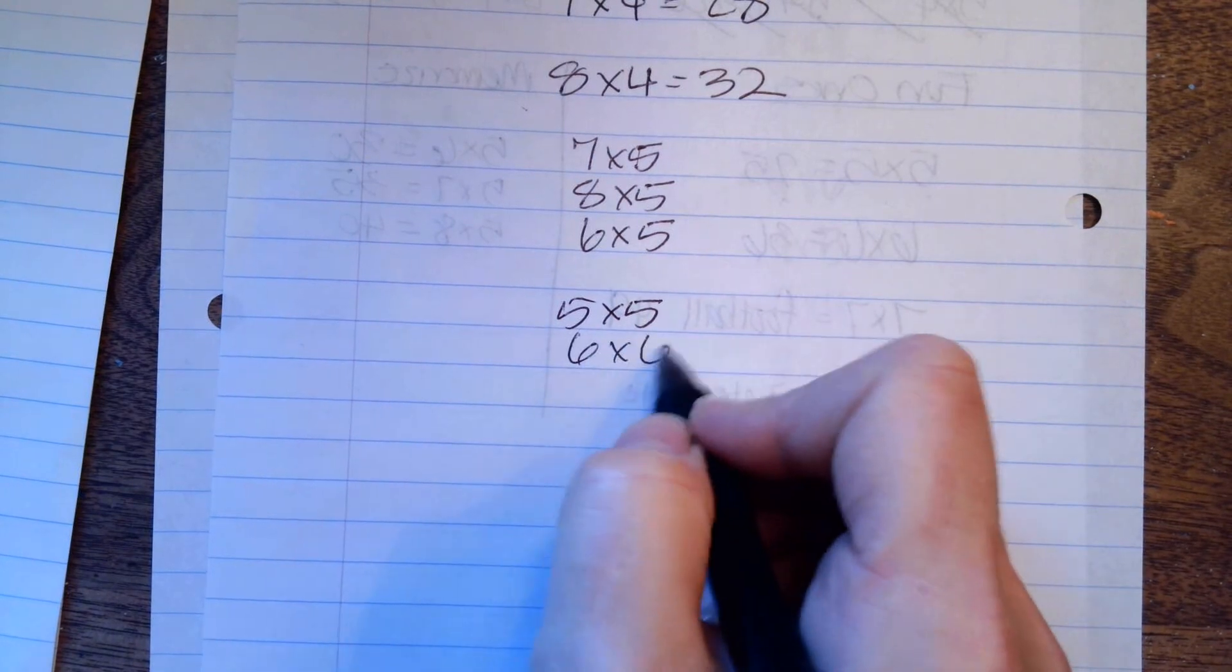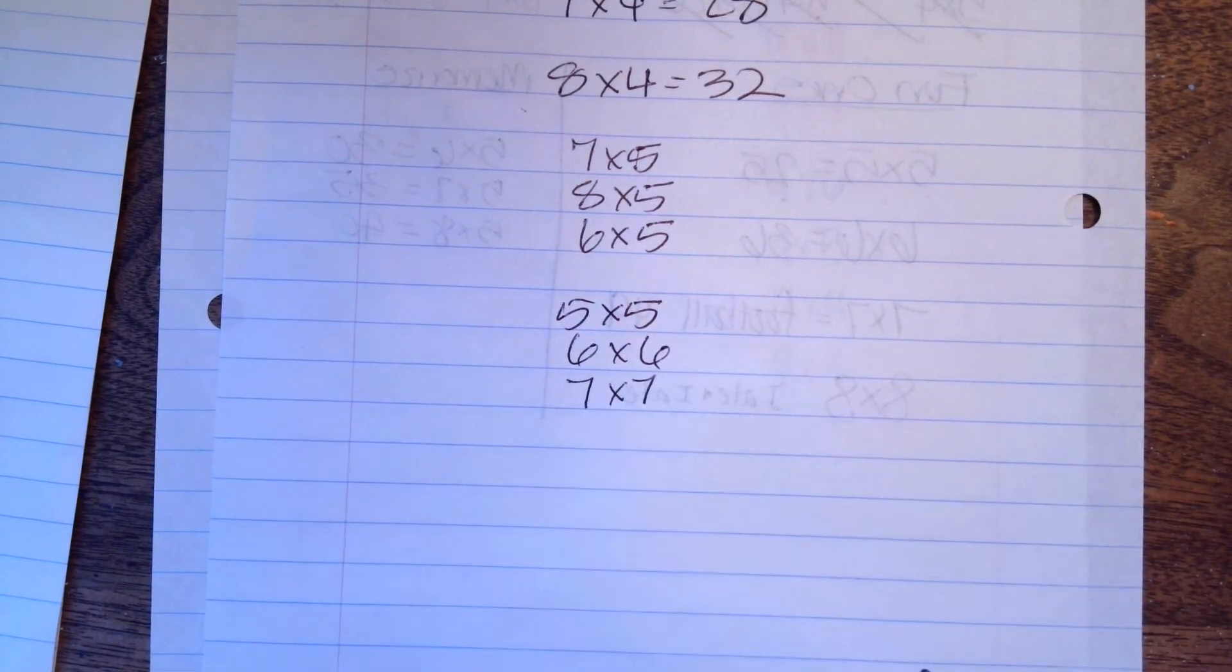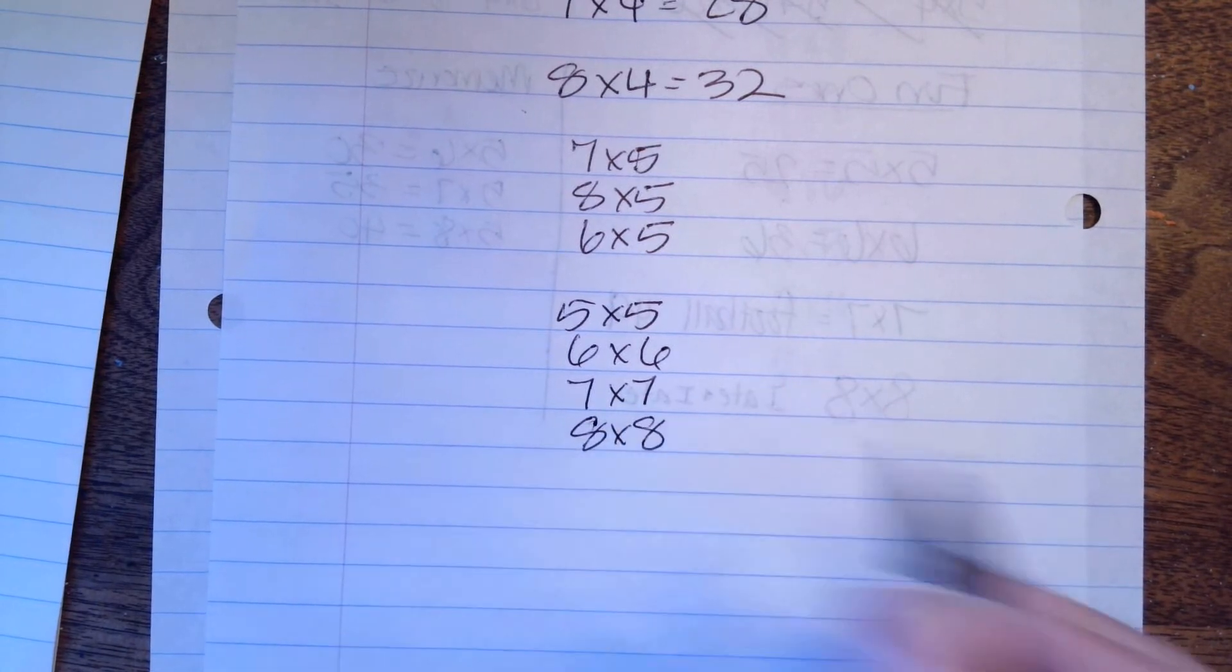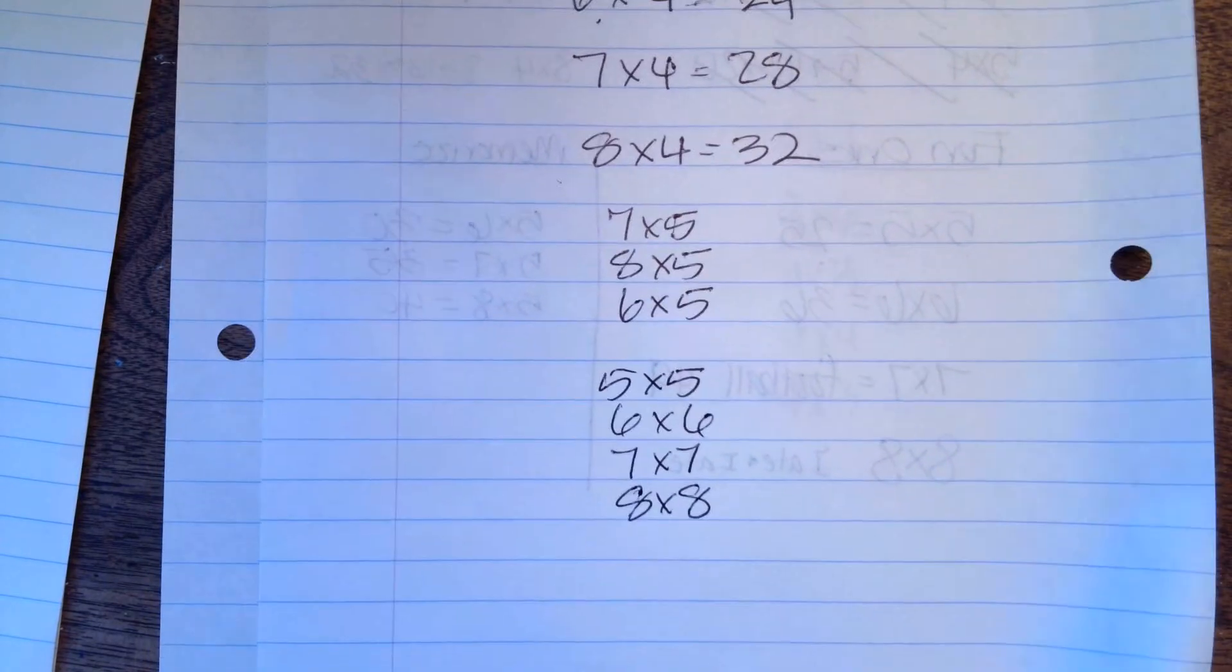6 times 6 is 36. 7 times 7 is our football team, 49ers. 8 times 8, I ate and I ate and I fell on the floor, 8 times 8 is 64.